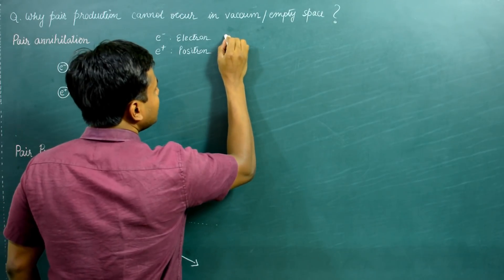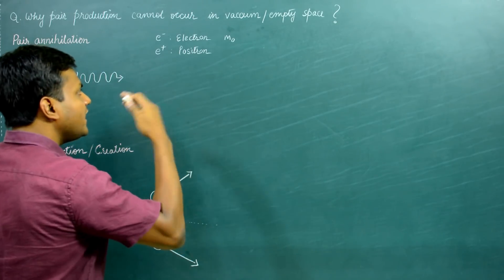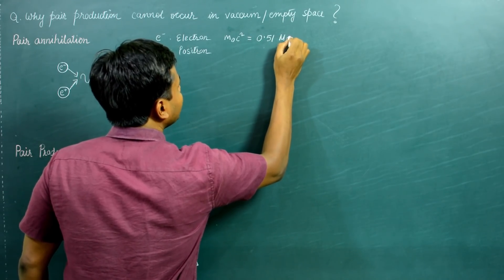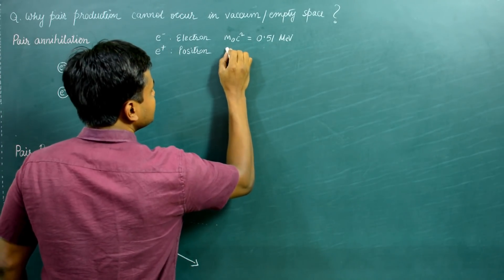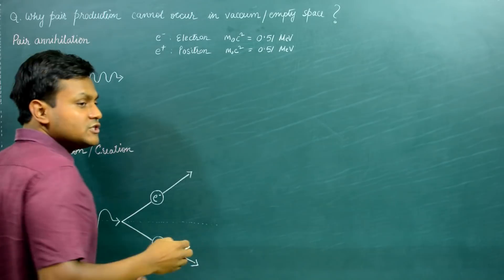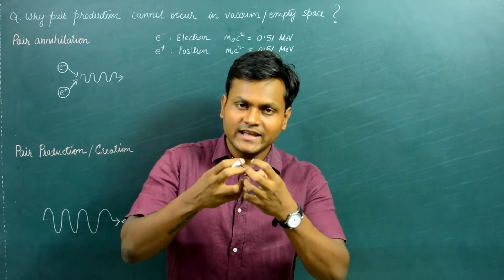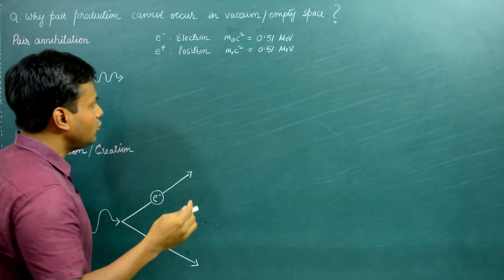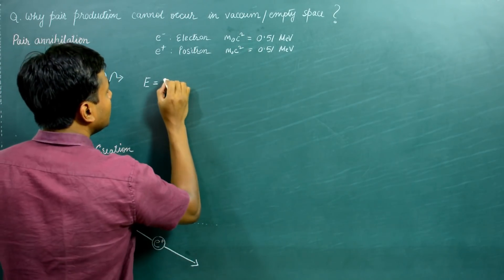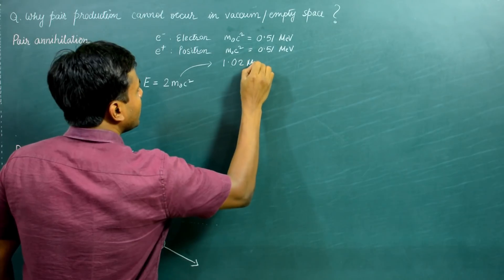The electron's rest mass, written as m₀, is around 9.1 × 10⁻³¹ kg. The energy associated with the rest mass, m₀c², turns out to be around 0.51 MeV. Similarly, since the rest mass of the electron and positron are the same, the rest mass energy of a positron is also 0.51 MeV. So when an electron and positron at rest come close due to attraction from opposite charges, they annihilate and create a high-energy photon with energy equal to 2m₀c², which is 1.02 MeV.